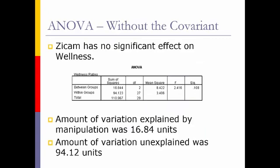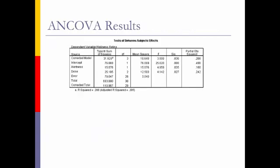Let's look at what happened before with the ANOVA - exactly the same test. We found that Zycam had no significant effect on wellness. The amount of variation explained by the manipulation was 16.84, and the amount unexplained was 94. That's not good - 94 is greater than 16, so we have a lot of unsystematic or unexplained variance. This is a perfect opportunity to add a covariate to reduce that number substantially.